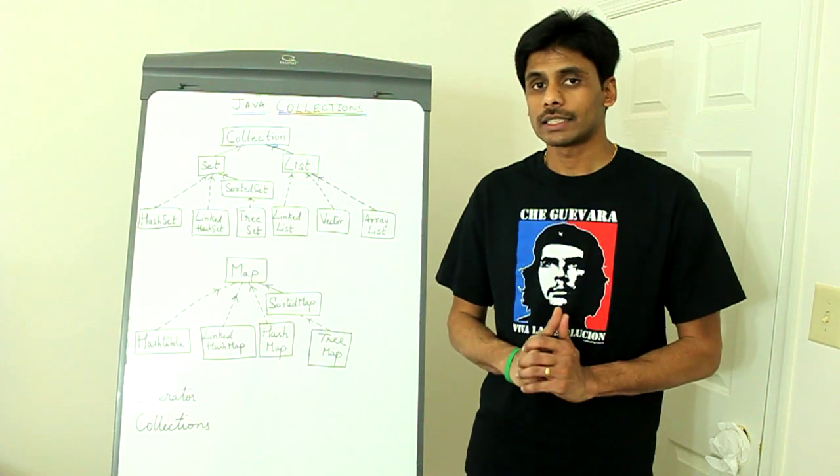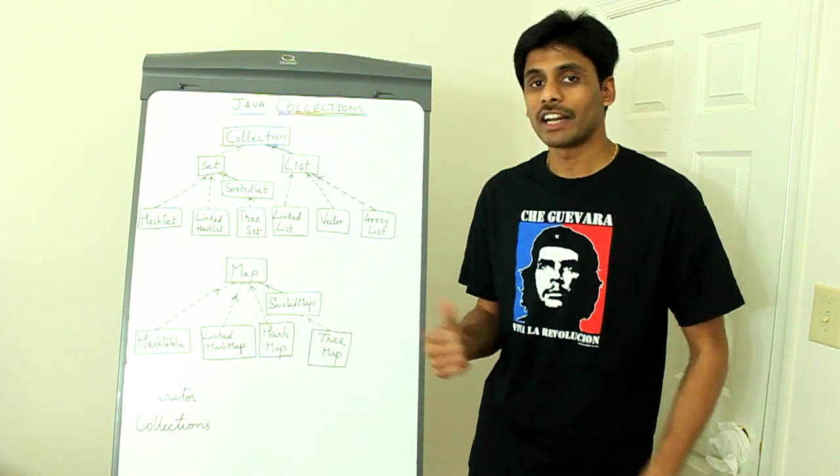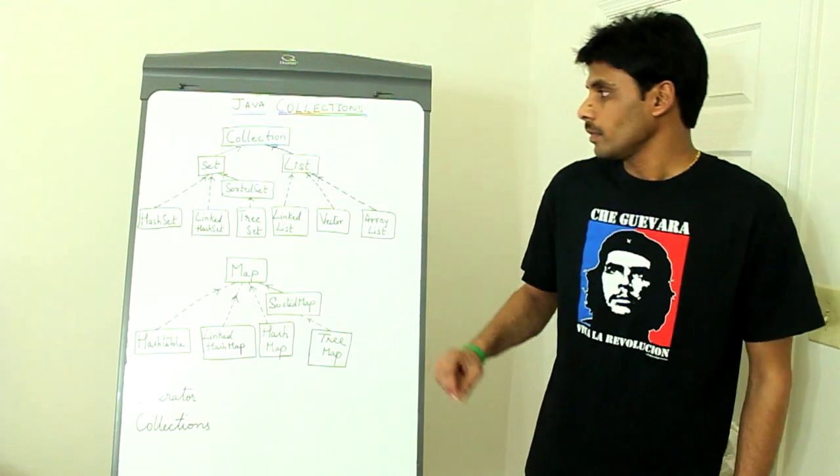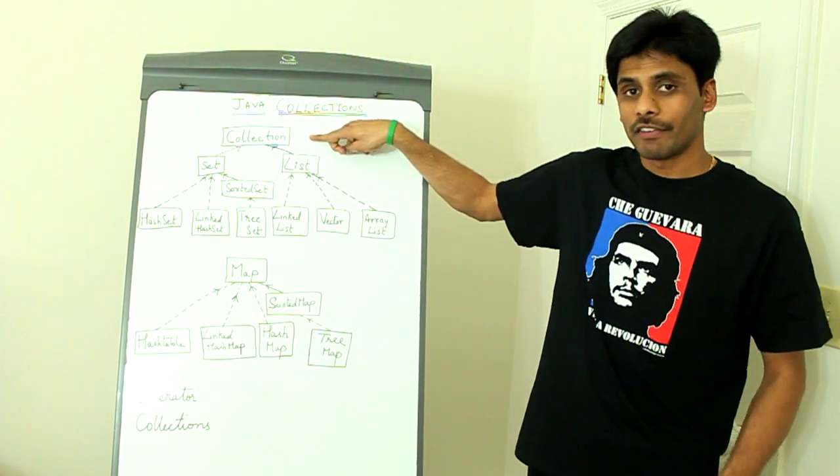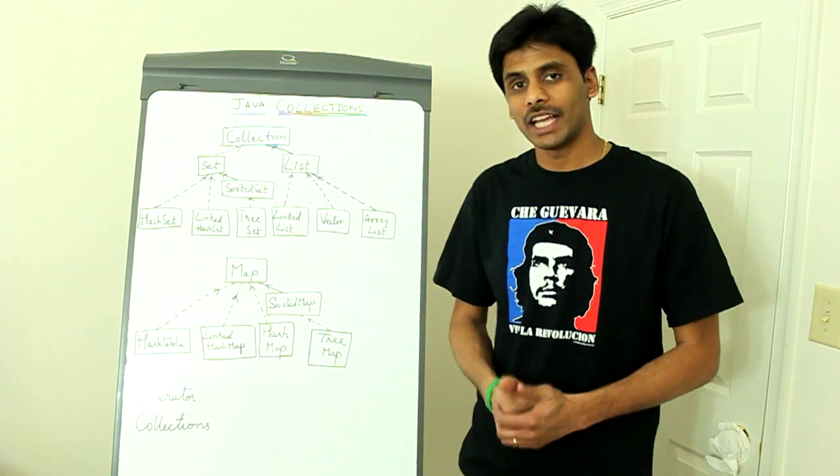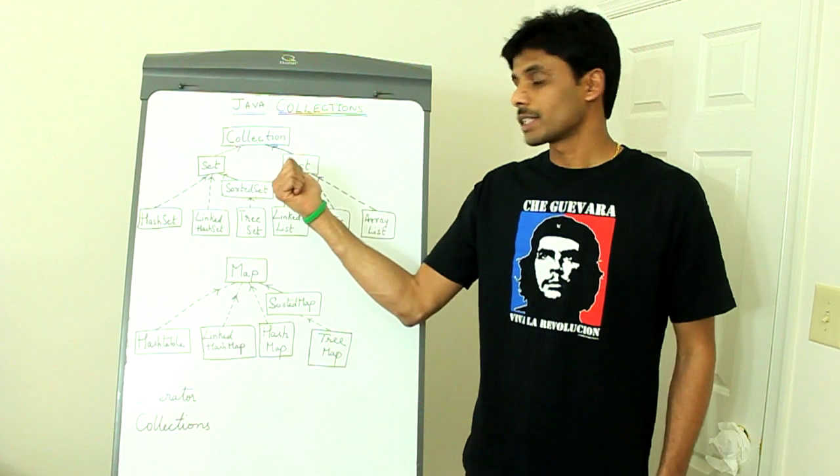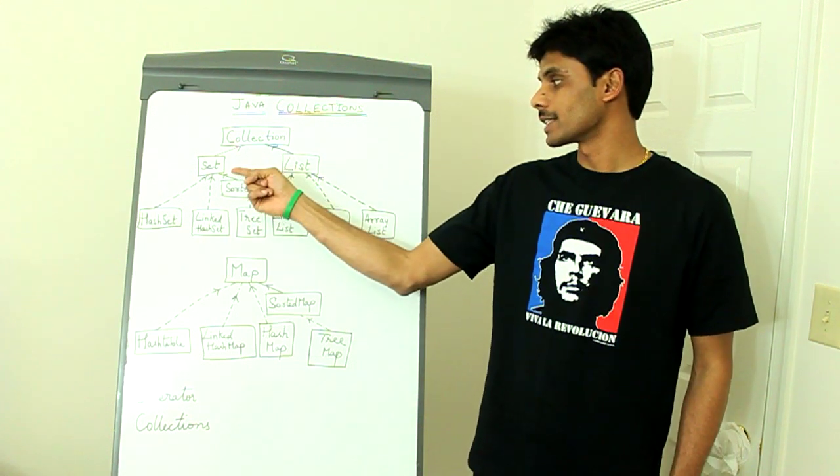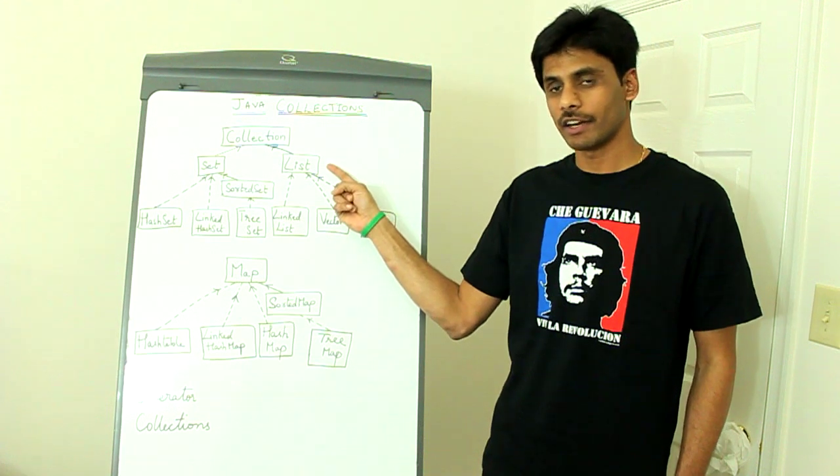So let's start by looking at the key interfaces and classes within the Collections API. At the top is the Collection interface, which is the main interface in the java.util package. This interface is inherited or extended by two other interfaces, the Set and the List interfaces.